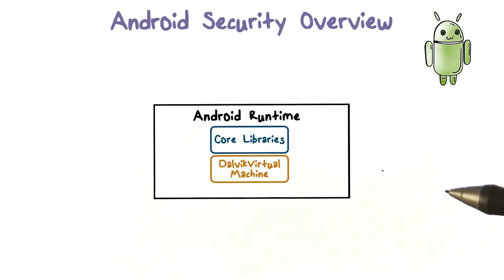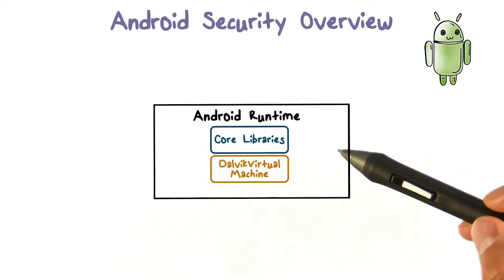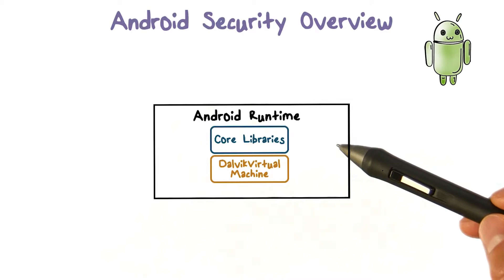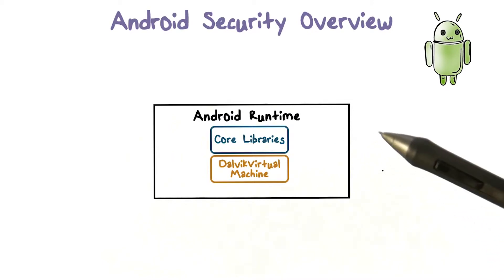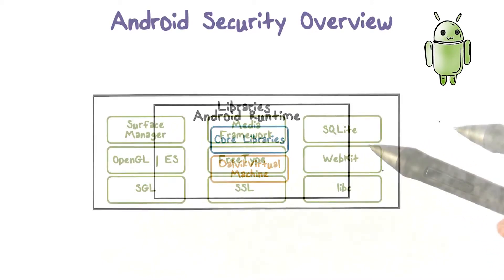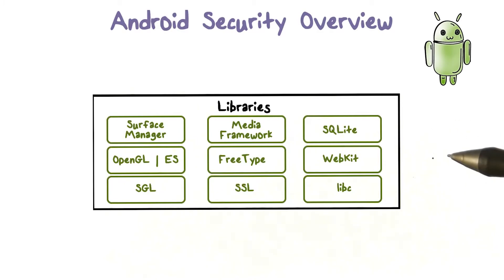The Android core libraries are Java-based libraries for application development — for example, for web browsing, data access and database queries, graphics rendering, and so on. The Android core libraries do not actually perform much of the actual work and are in fact essentially Java wrappers around a set of C and C++ based libraries.